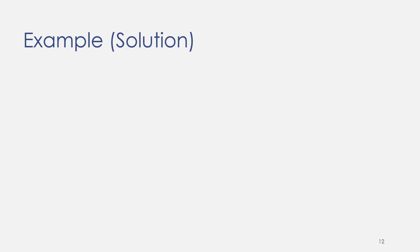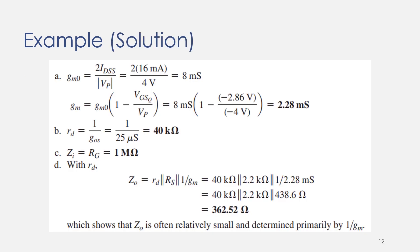In the solution, we first find gm0 using IDSS and Vp, which gives 8 mA/V. Using gm0, we find gm = 2.28 mA/V. Since gos was already given, we can easily find Rd = 40 kΩ.